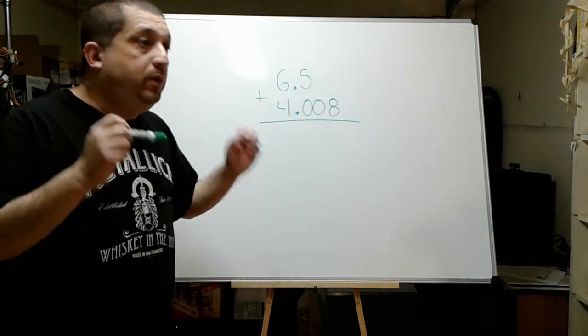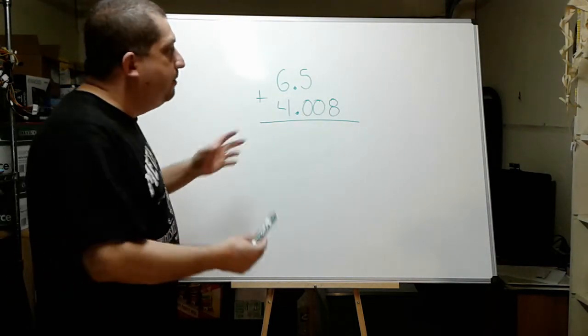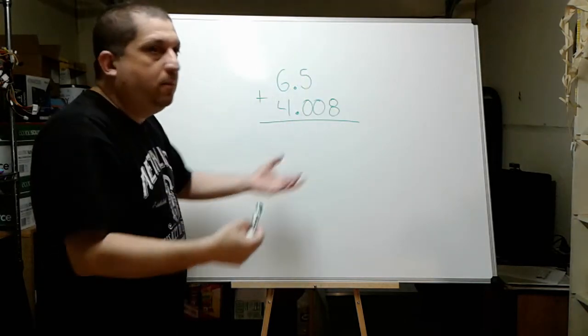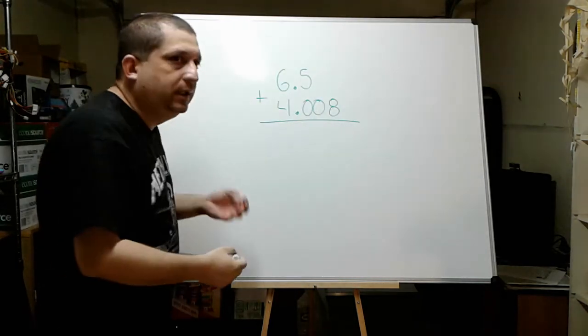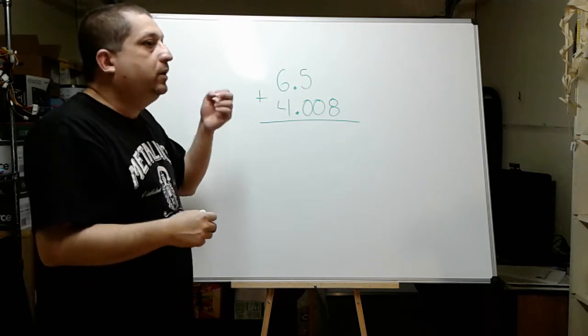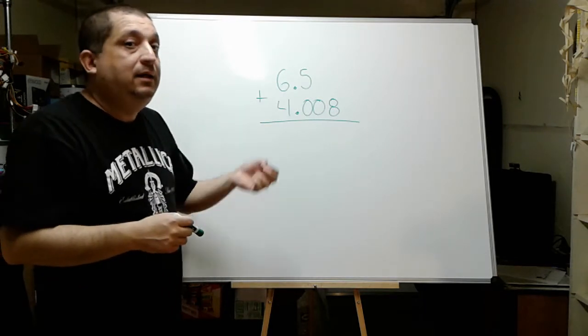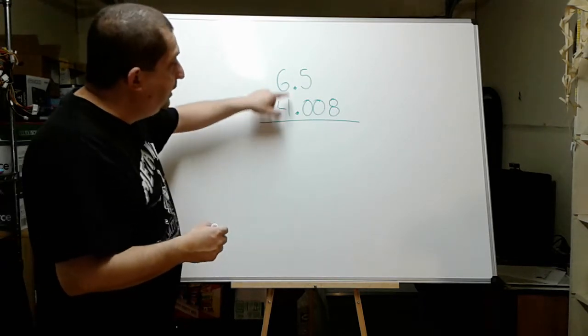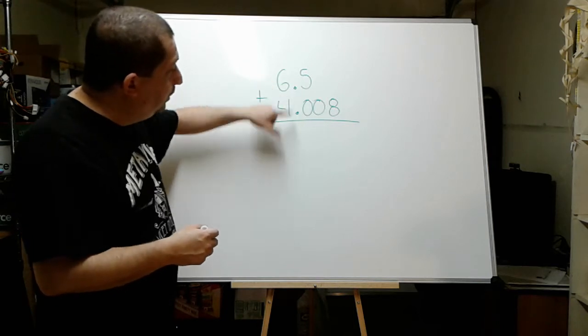One of the things that we do have to make sure however, is that we align our numbers. Let us go back and align our numbers accordingly. This time, not only are we going to align them by the place value, but we are also going to align them by the decimal period.